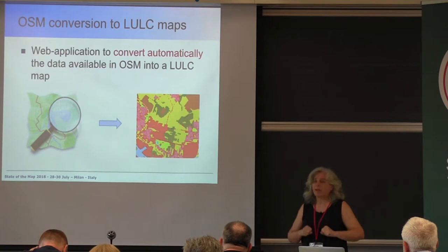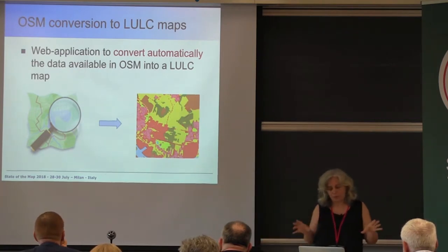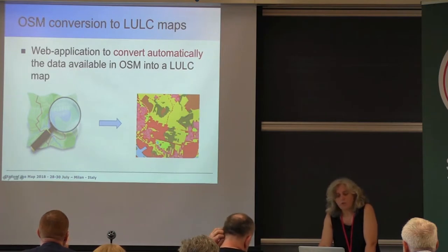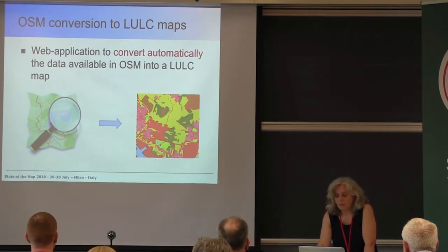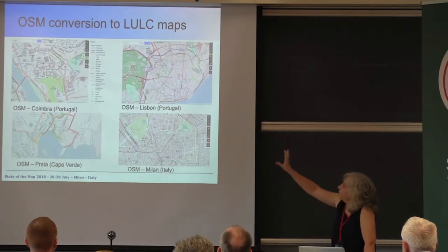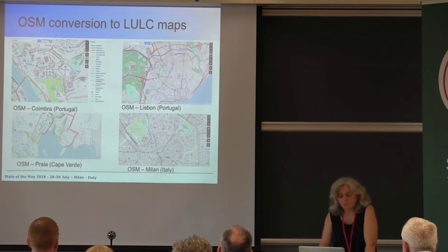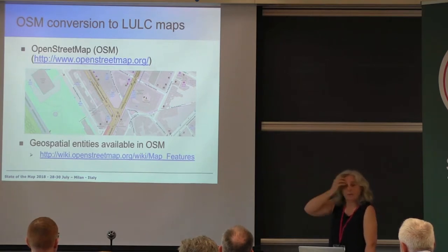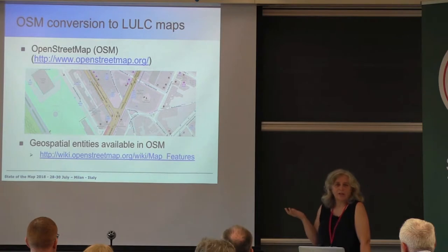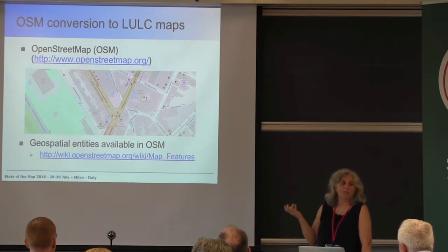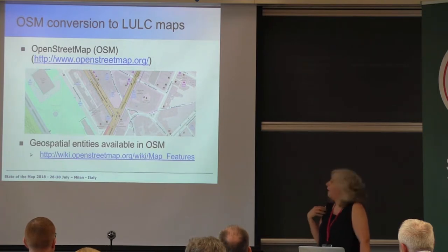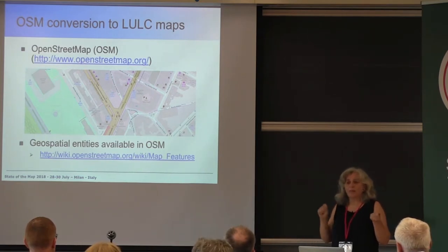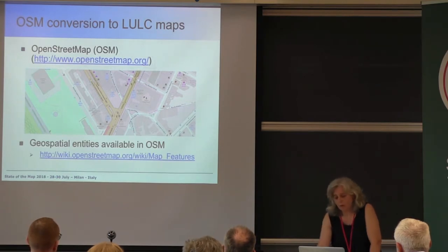The aim is to take OSM data and create a land use land cover map with specific classes. We are developing a web application which automatically converts what is available in OSM to a land use land cover map. We have lots of data in OSM with its map features, and we need to go through all those features and determine how they can be associated to the land use land cover classes we are interested in, using the OSM wiki.